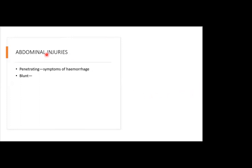Signs of abdominal injury include abdominal pain and rigidity — stiffness of the stomach muscles especially on palpation — and abdominal distension. The client may complain of nausea and vomiting and may be in shock. Remember: in shock, BP goes down, pulse and respiration go up. We may also see ecchymosis — bleeding under the skin due to trauma — which is indicative of intraperitoneal bleeding.